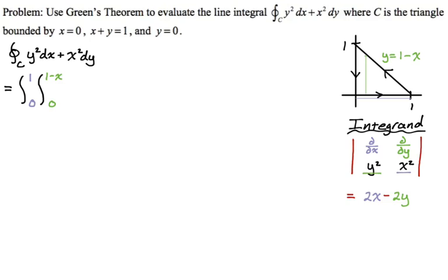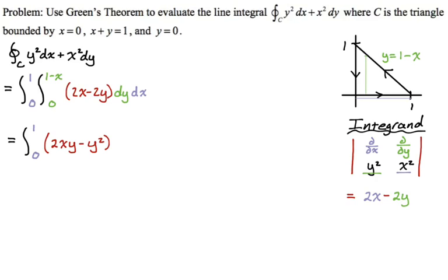So our integrand is 2x minus 2y, then dy and then dx. The integral of 2x with respect to y is just 2xy, and the integral of negative 2y is just negative y squared. So we get 2xy minus y squared, evaluated with y going from zero to one minus x. Then we'll take the result and integrate with respect to x.